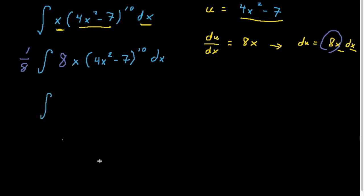So let's rewrite the integral, keeping that 1/8 out in front. And then we can write, okay, this is u to the 10th power and 8x dx is du. We'll take the antiderivative: 1/8 times u to the 11th power over 11 plus c.